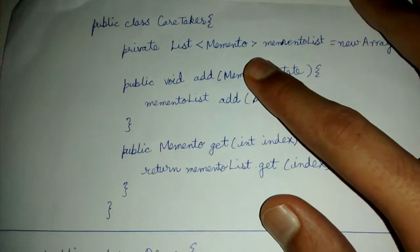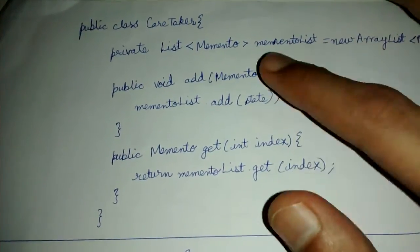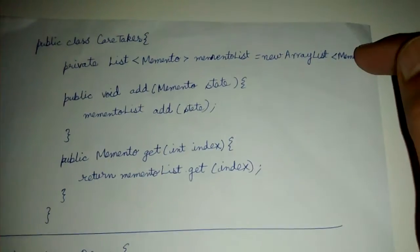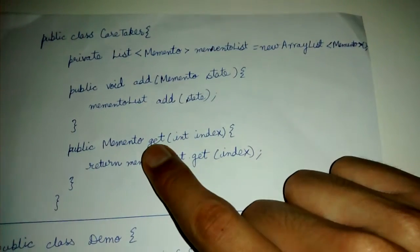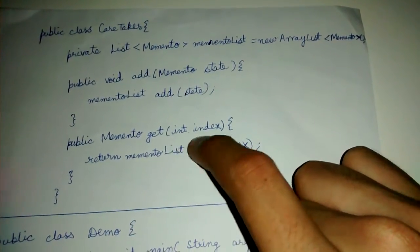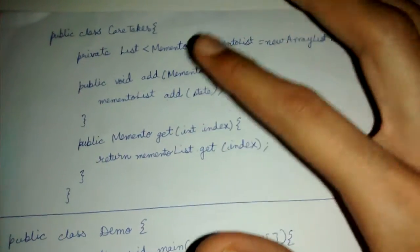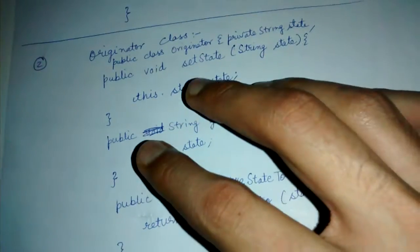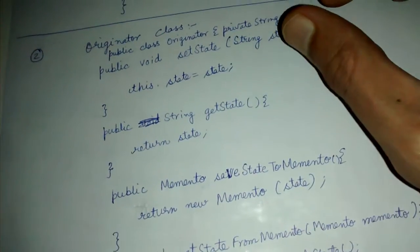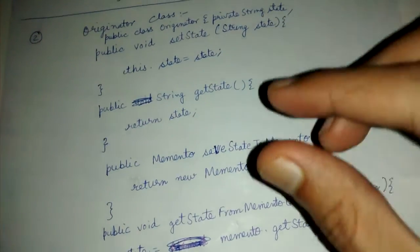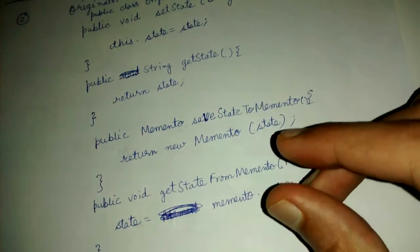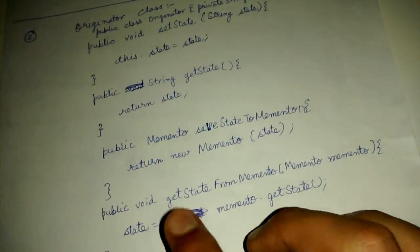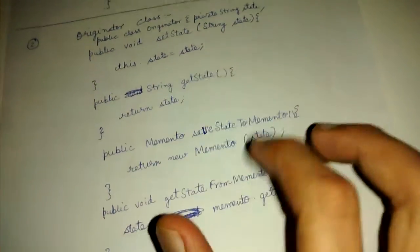Let's look at the Caretaker class, which is the third class. It does nothing but store a list of mementos — that is, a list of states. We can add one more state to the list and we can get the state at a particular index. So the caretaker is essentially a list, the memento is the state, and the originator maintains a state and can save or retrieve it.